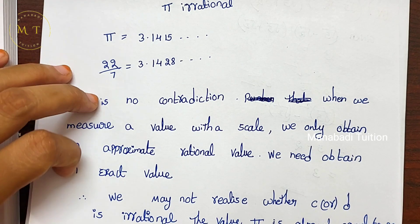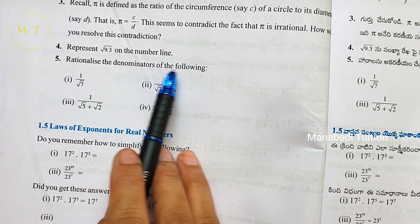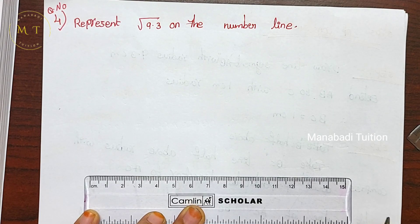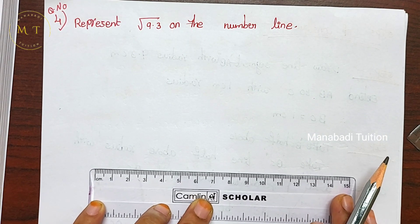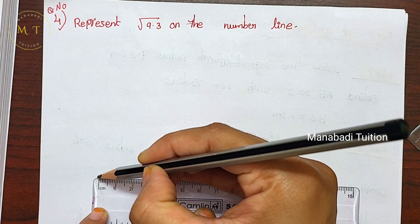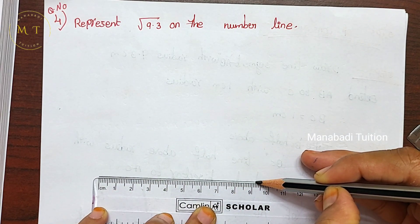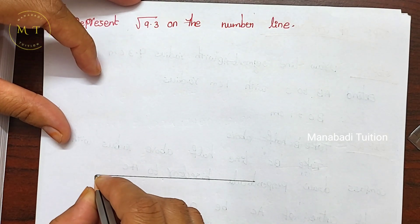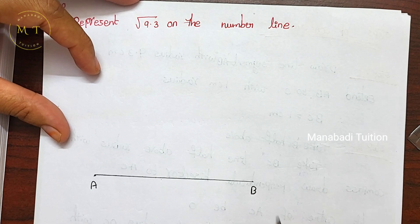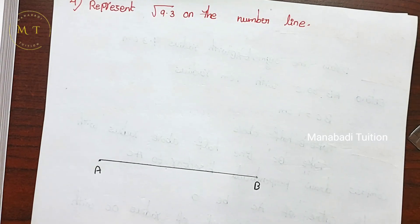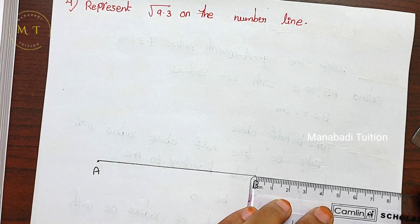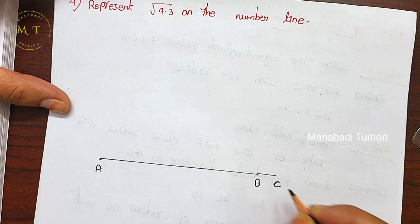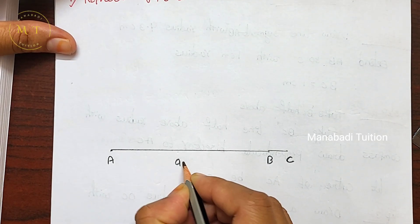Next, question number 4: represent root 9.3 on the number line. We need to show root 9.3 on the number line. Draw a line segment. Mark 9.3 on the number line and label points A and B, with AB equal to 9.3, then extend by 1 cm to point C.